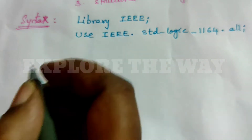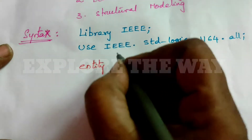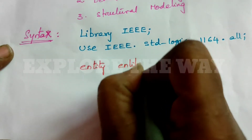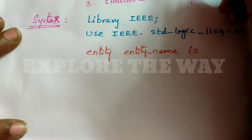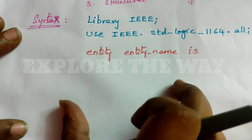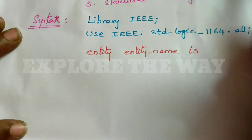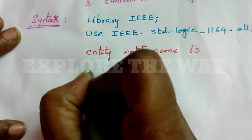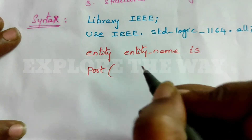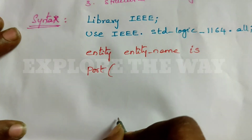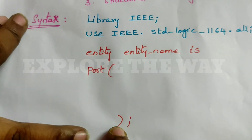The second part is the entity. Write 'entity name is'. Here the inputs and outputs should be declared. In VHDL, these inputs and outputs are called ports — input ports and output ports. All the ports are declared using the keyword 'port', with an open bracket and a close bracket. Inside these brackets, we declare all the ports, both input and output ports.